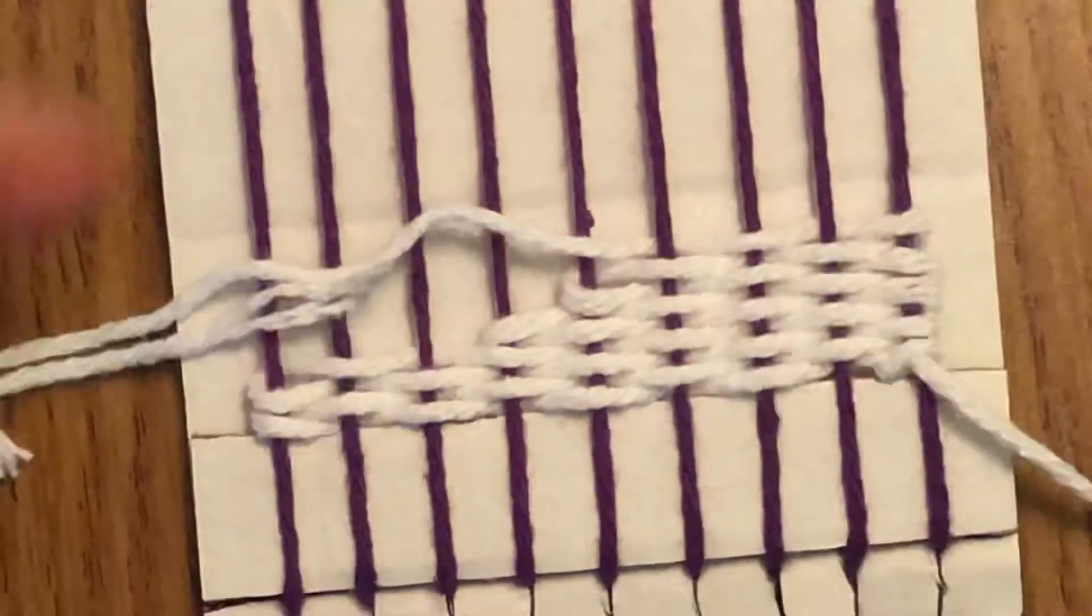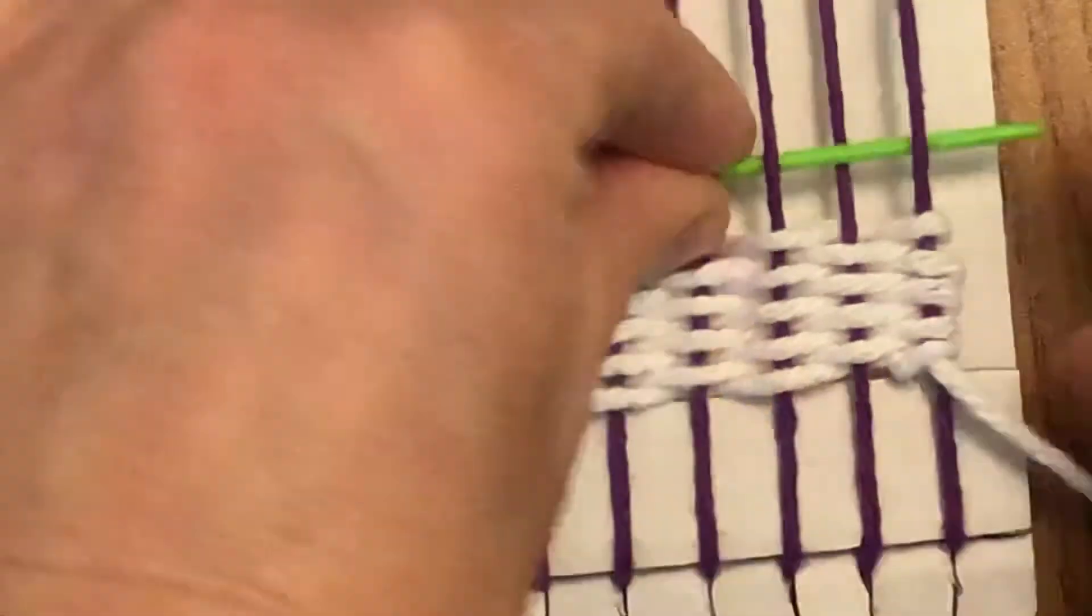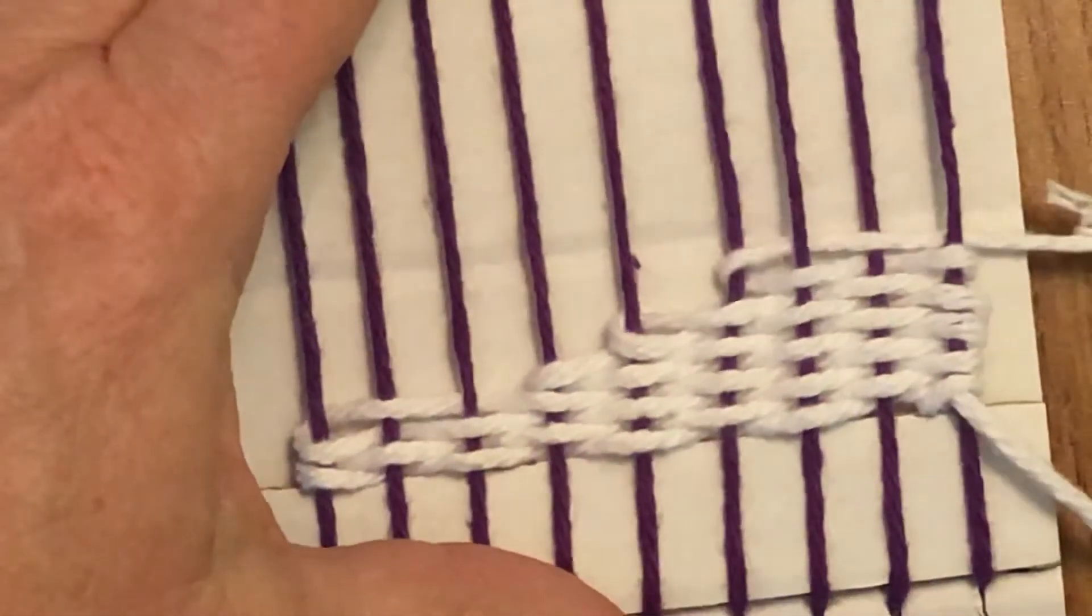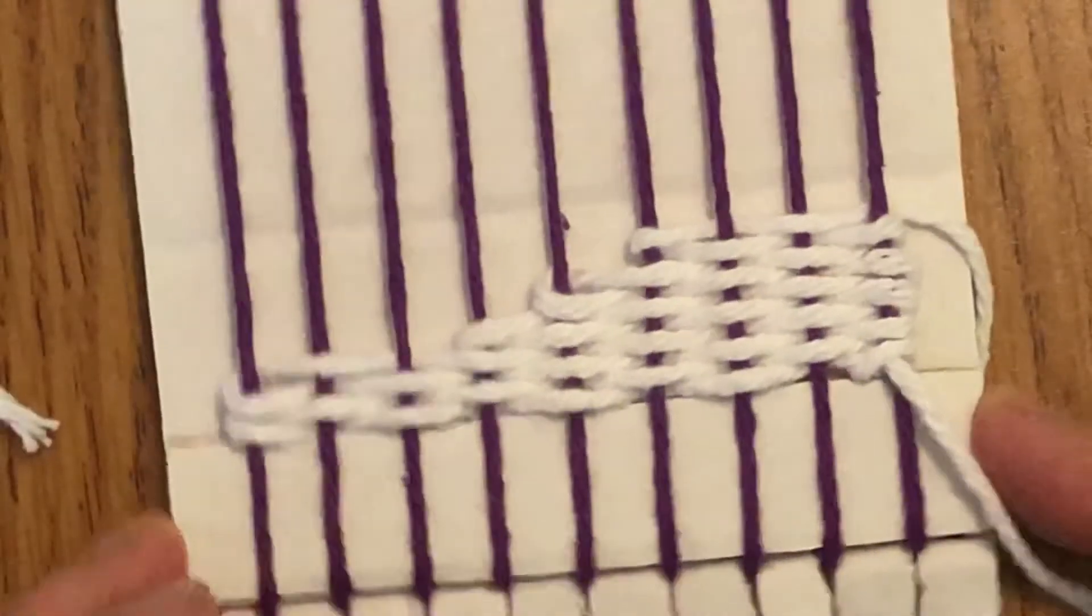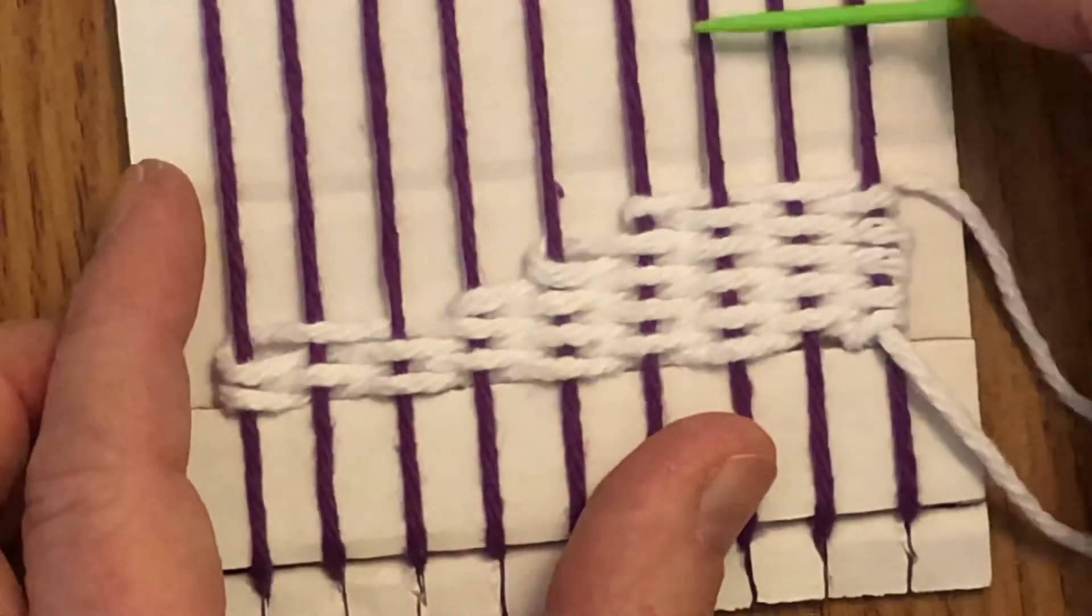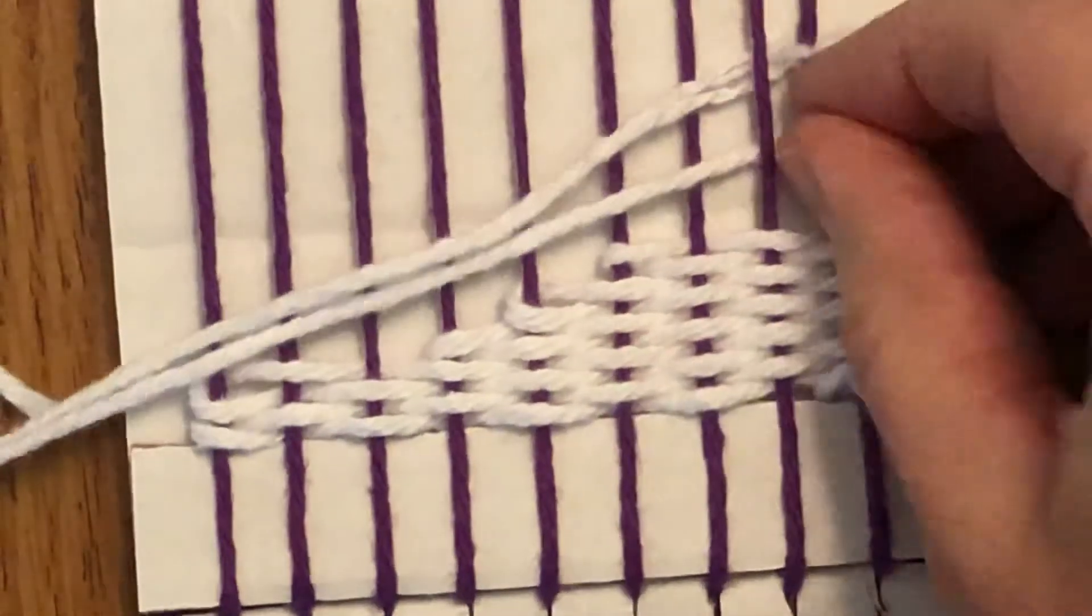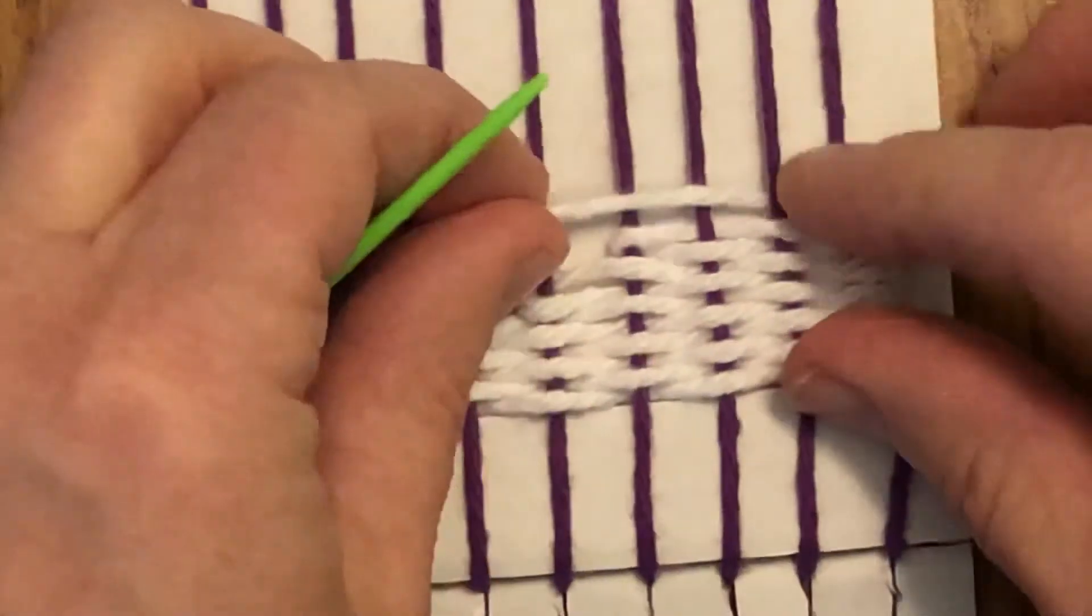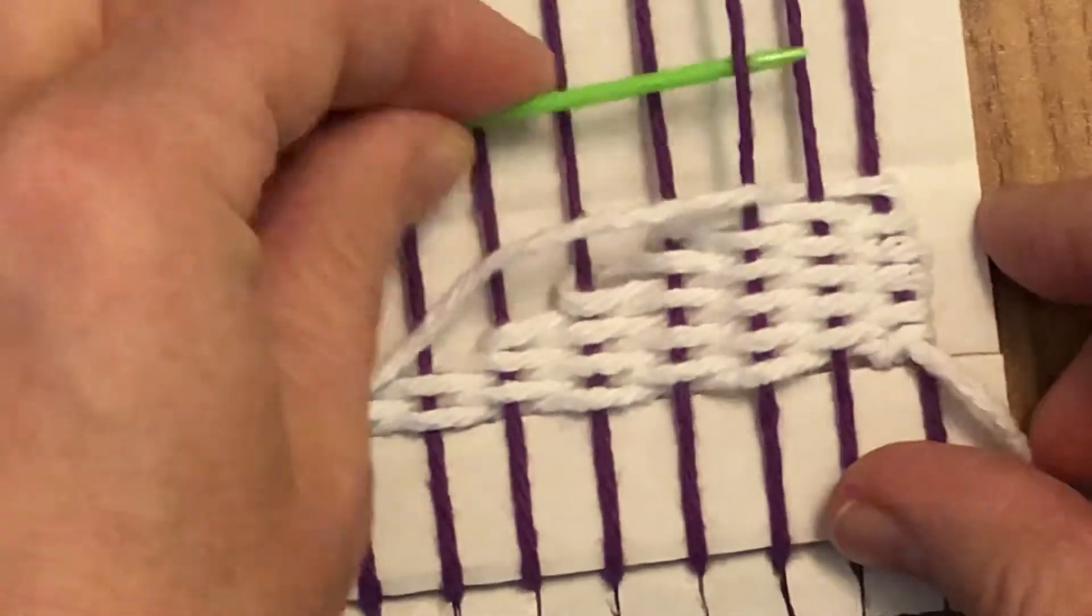Go across, push it down. I'll go back. Each time you're just wrapping around one less. See how it's starting to make that wedge? This time I want to end with this one, and I haven't really ended that row until I wrap around it, so I got to make sure I go around it.